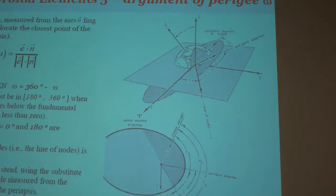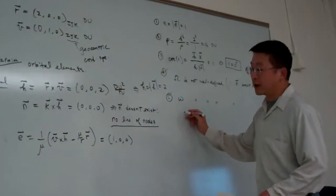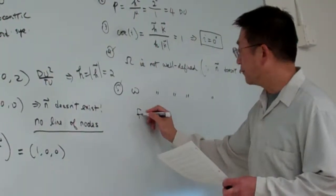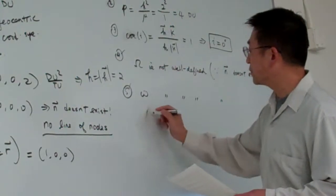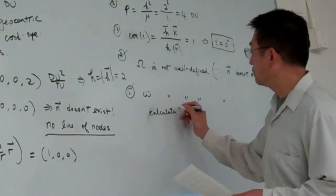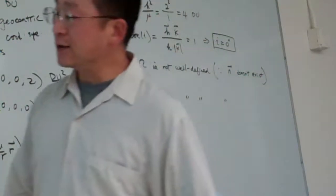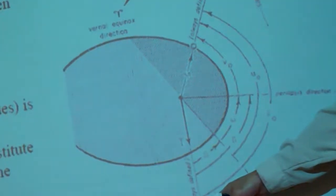So for this case, since the n does not exist, so rather than we calculate it using, we calculate pi. Okay. So again, the pi, again, you look at this one, that is the angle between the e vectors and i vectors.